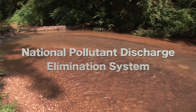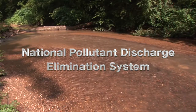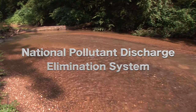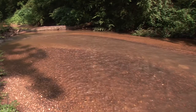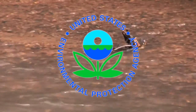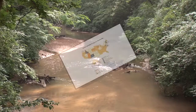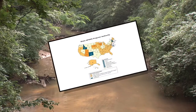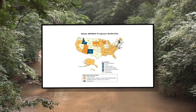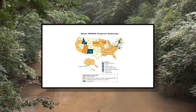The discharge of pollutants is controlled through the issuance of permits through the National Pollutant Discharge Elimination System, or NPDES, permit program. While the Environmental Protection Agency has the ultimate authority to enforce the Clean Water Act, the agency has authorized most states with the authority to administer a permitting program. States must demonstrate their permitting programs meet the standards established by the Clean Water Act and the NPDES regulations in order to be authorized by the EPA.